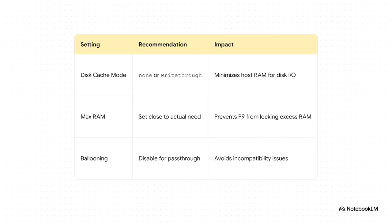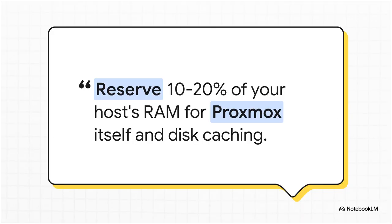A few small tweaks inside your VM settings can also make a big difference. Try changing the disk cache mode to 'none' or 'write-through', and be more realistic with the max RAM you're setting for each VM. If you're using pass-through for a specific VM, turn ballooning off completely. And here's a vital rule of thumb: stop allocating every last drop of RAM to your VMs. Proxmox itself needs room to breathe. Keep about 10–20% of your total RAM free for the host — on Proxmox 9, this is a survival tactic.